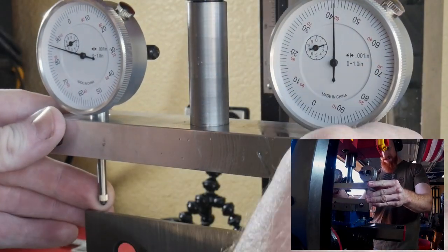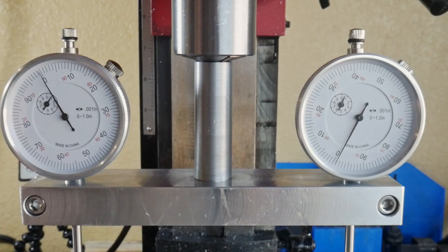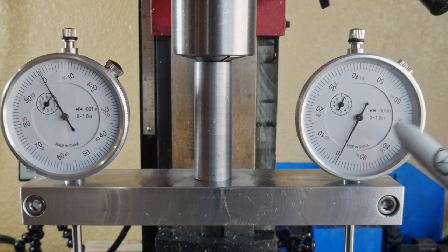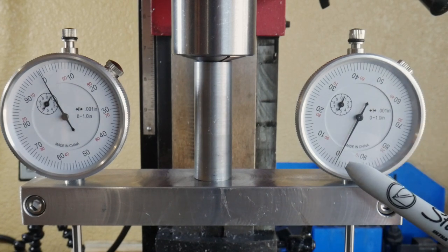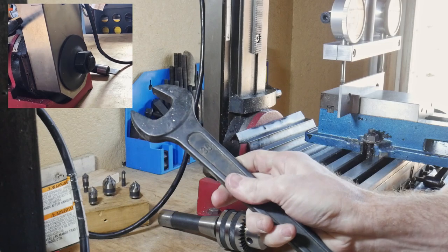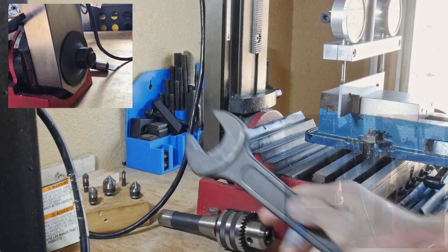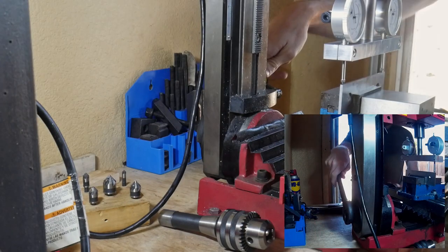Once we are calibrated, we can see how in tram my mill already was and happily I was already pretty much in tram here with about a half of a thousand difference between the two dial indicators. However, for the sake of YouTube, I will take my trammed mill and knock it out of tram so that we can re-tram it for the video.